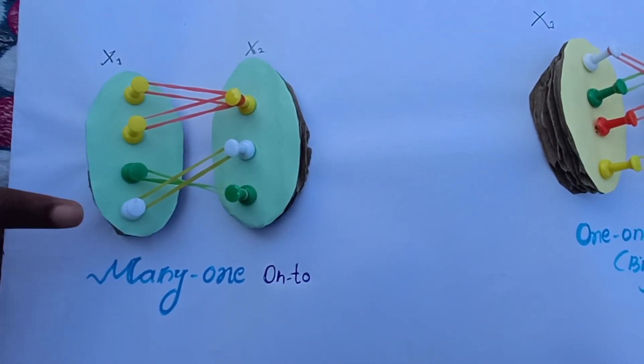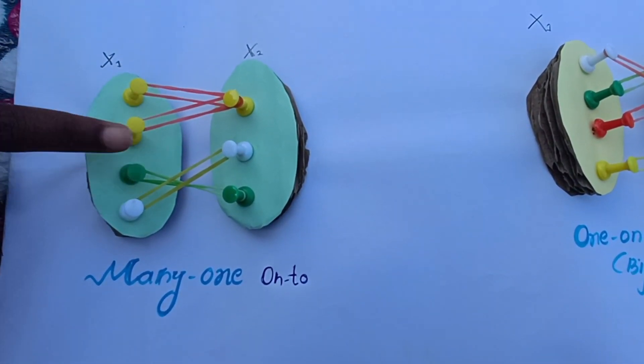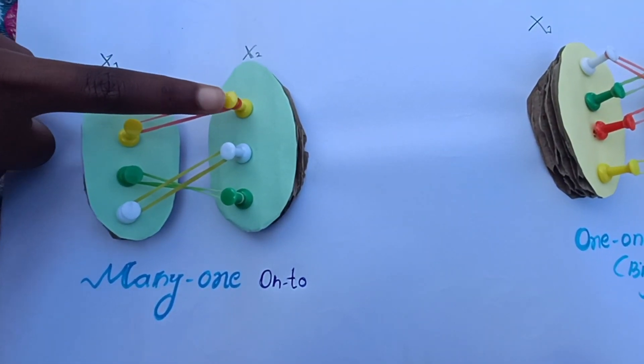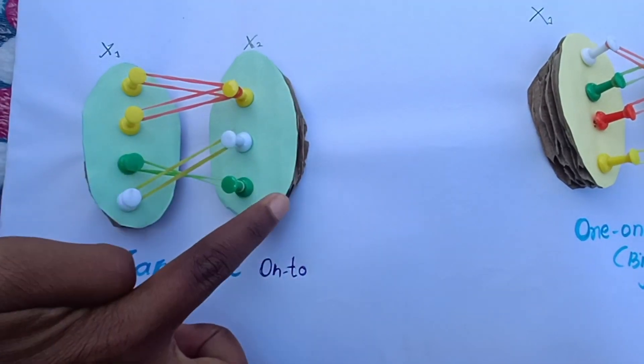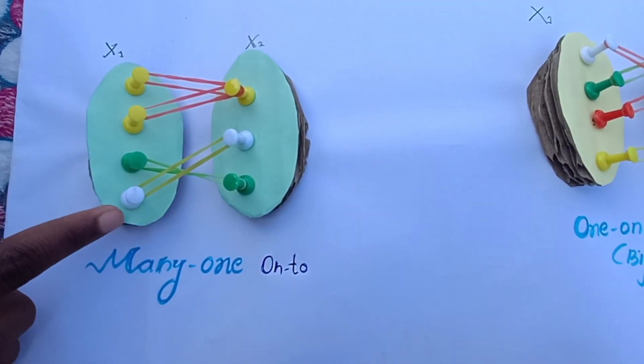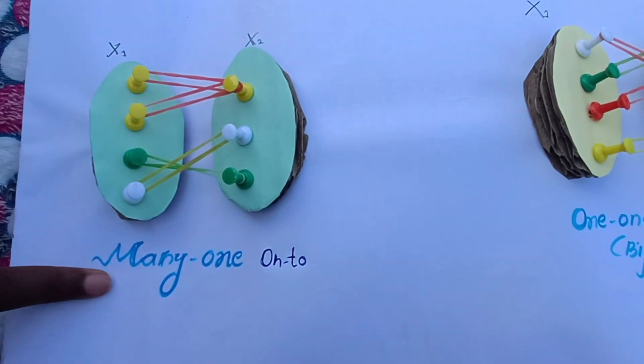This function is many-one. Two elements of set X1 are related to one element of set X2. And all elements of set X2 have their preimage in set X1. Hence, this function is a many-one onto function.